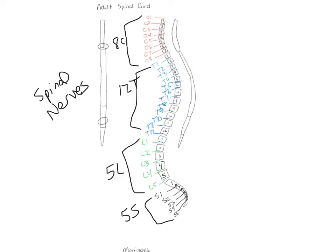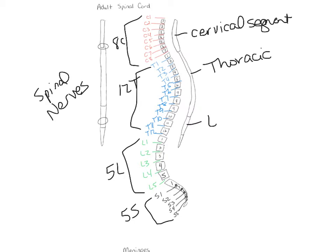Here's a picture showing the actual length of the spinal cord. This is the cervical segment, this is the thoracic segment, this is the lumbar segment, and this is the sacral segment. That's how long the spinal cord is - it ends right at L2.